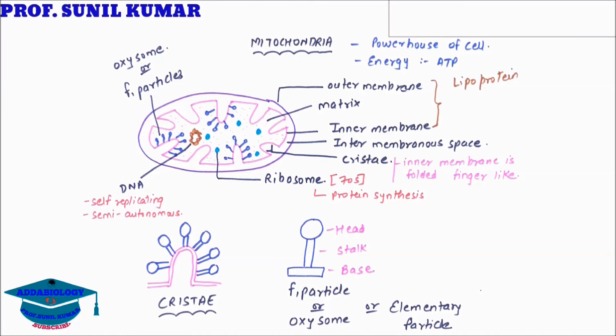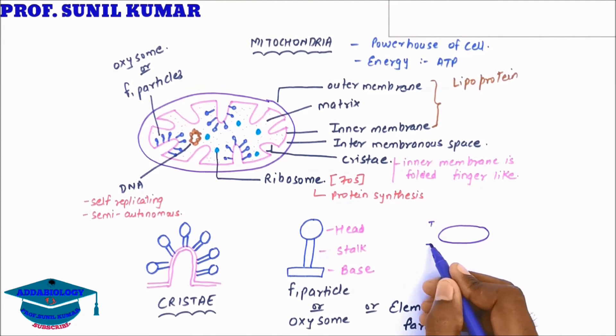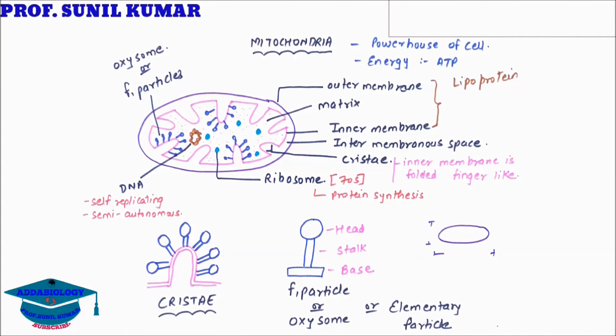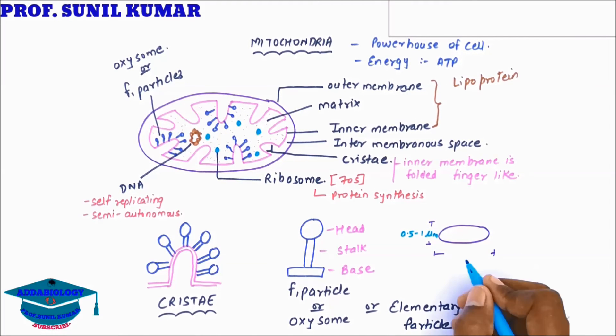The dimensions of mitochondria are 0.5 to 1 micron in breadth and 1 to 4 micron in length.